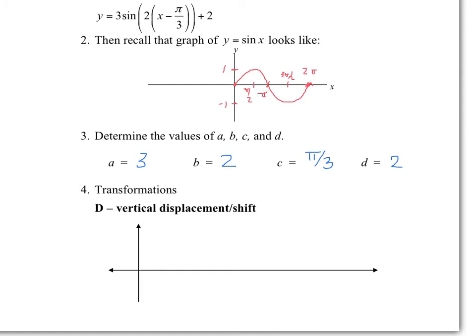So for the vertical shift: with our value of D, we call this the central axis. Instead of our axis being at zero, we move everything up 2. So our sine graph would start at 2, the maximum would be at 3, come back to 2, go down to 1, and back to 2. Our sine graph moves up 2. We call this the central axis because it's the central line the graph goes above and below.